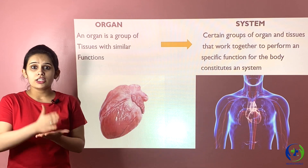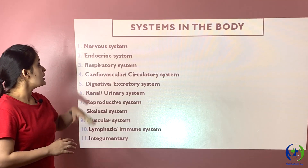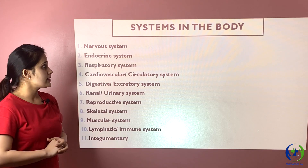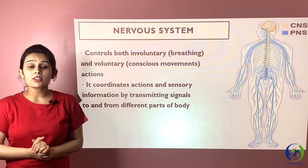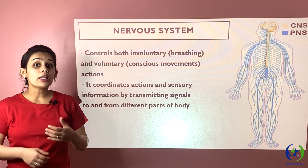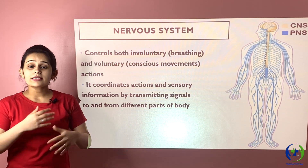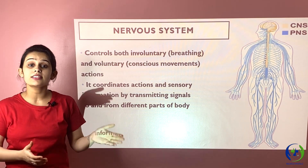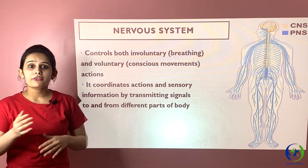So this is how a system is formed: cell → tissue → organ → organ system. Now there are altogether 11 systems present in the human body. Let's take a brief look at each system. The first is the nervous system. The nervous system controls involuntary actions like breathing, digestion, and excretion, as well as voluntary or conscious movements like waving hi, hello, or bye. All these actions are controlled by the nervous system.